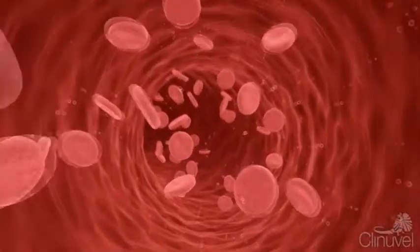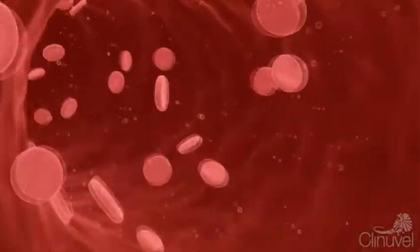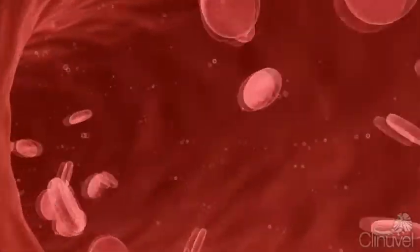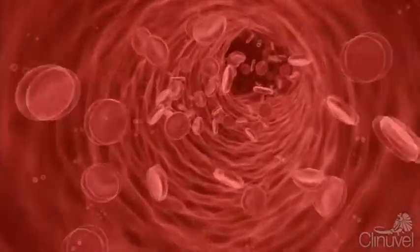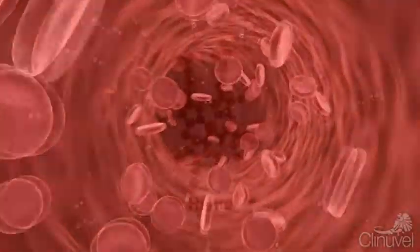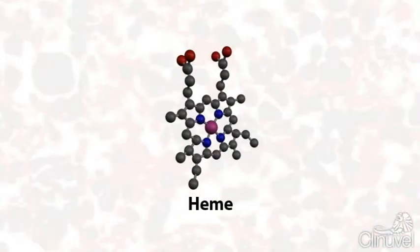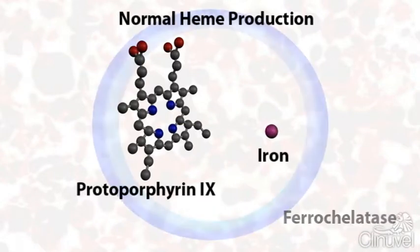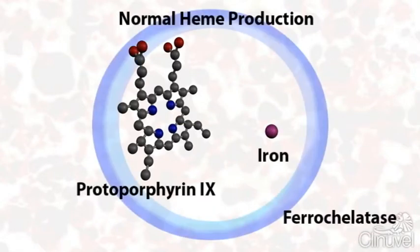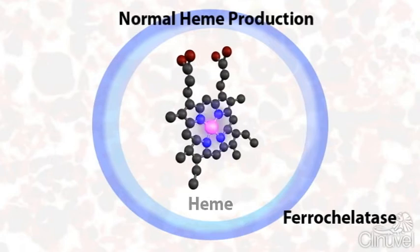Humans produce red blood cells or erythrocytes and these contain haemoglobin which is pivotal for the transportation of oxygen around the body. One of the steps in haemoglobin production is the generation of haem. In a normal individual, haem is formed by the combination of protoporphyrin-9 and iron. This reaction is catalyzed by an enzyme called ferrochelatase.